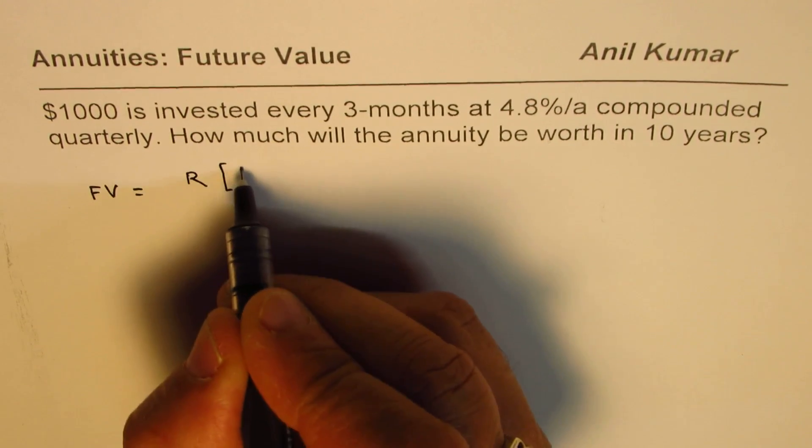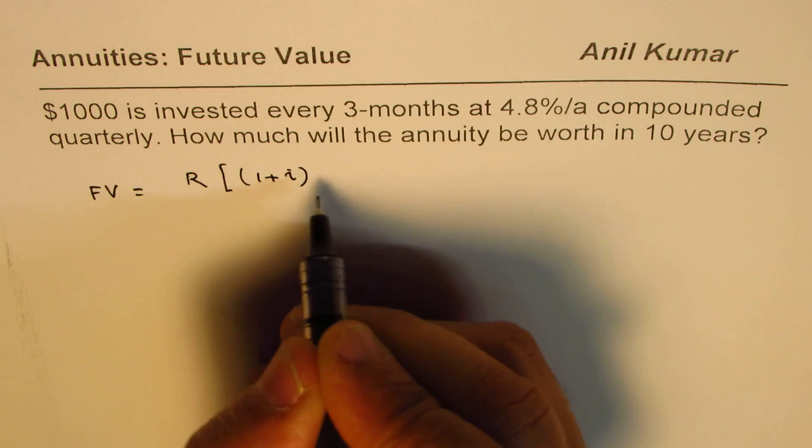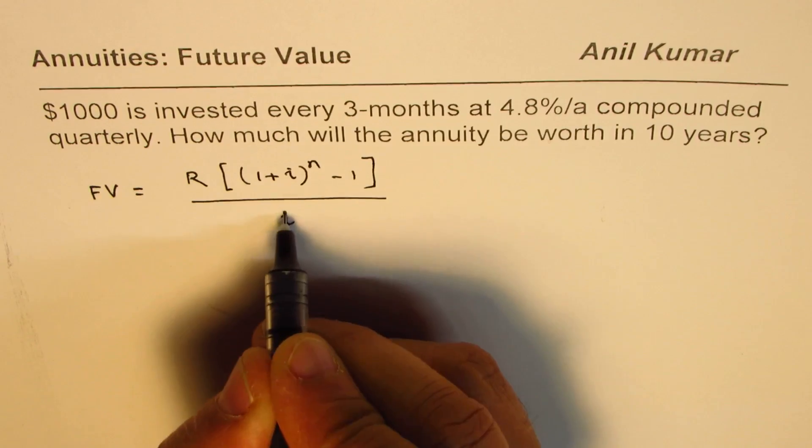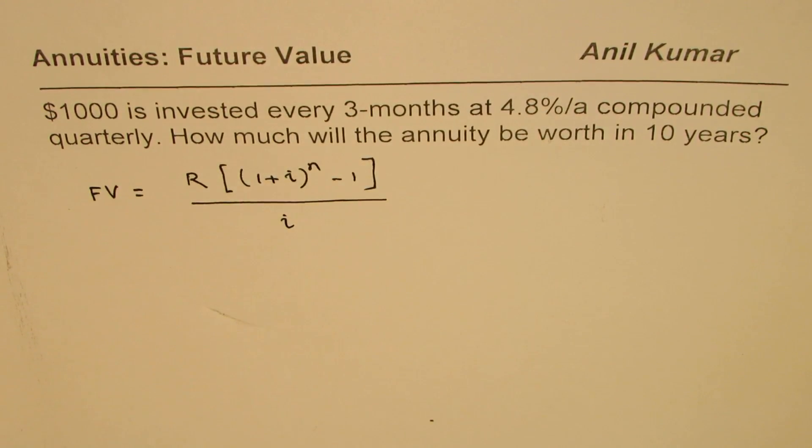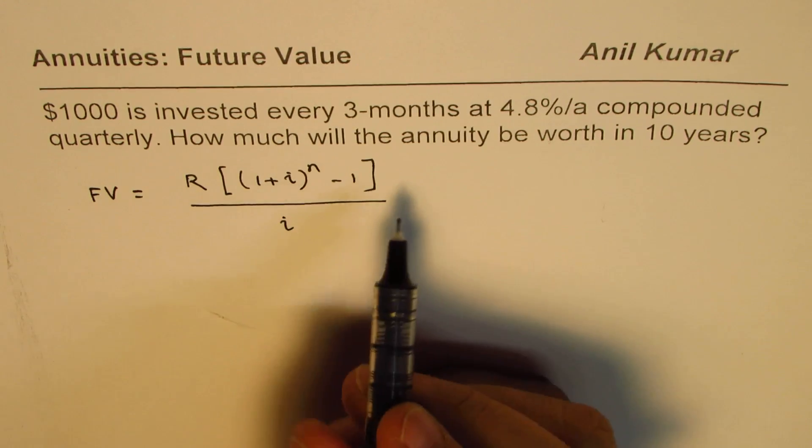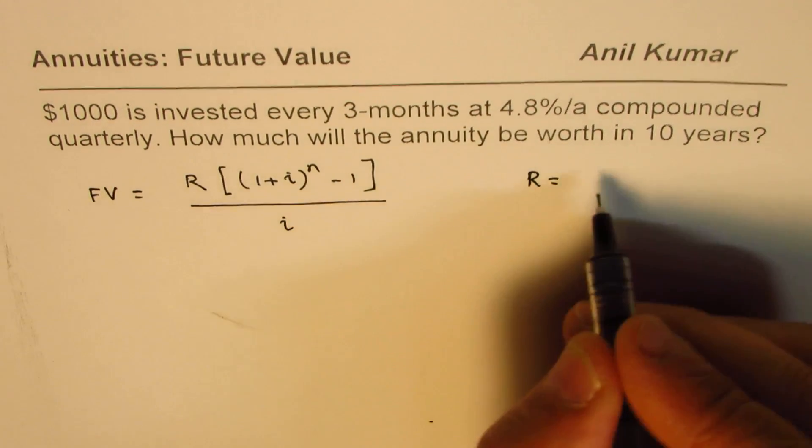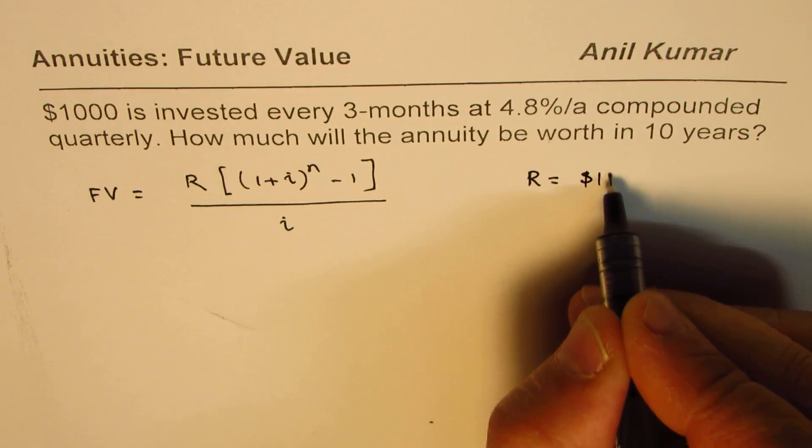Now you know the formula. The future value formula for annuities is R[(1+i)^n - 1]/i. That is the formula. In our case, R is given to us as equal to $1000.